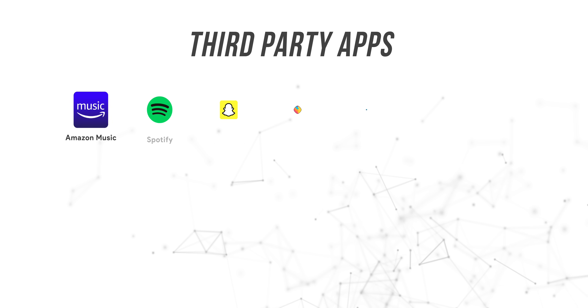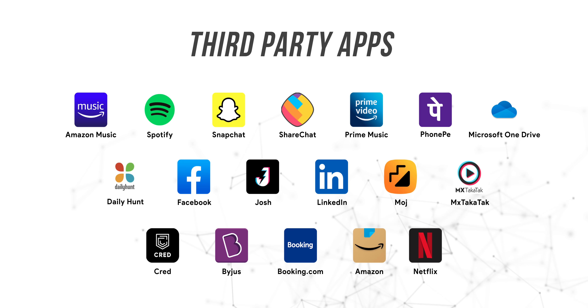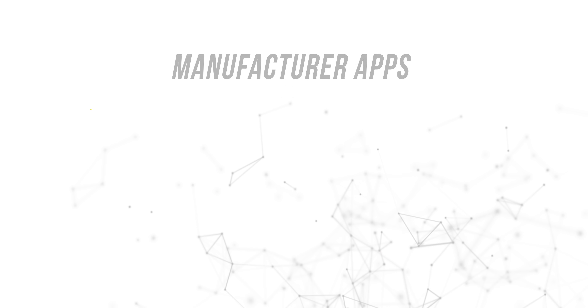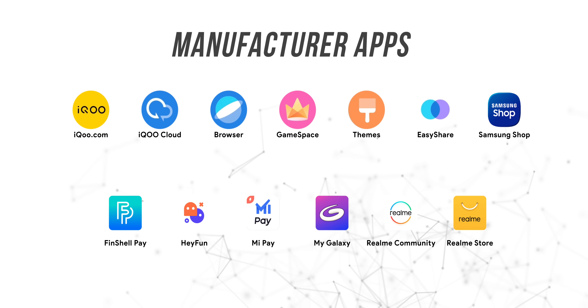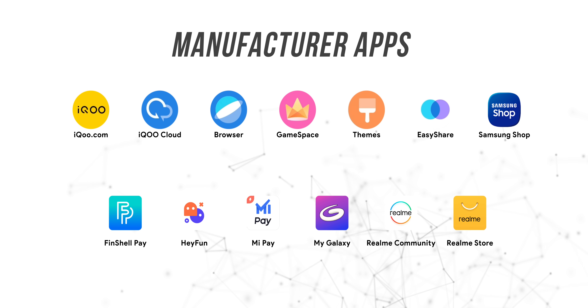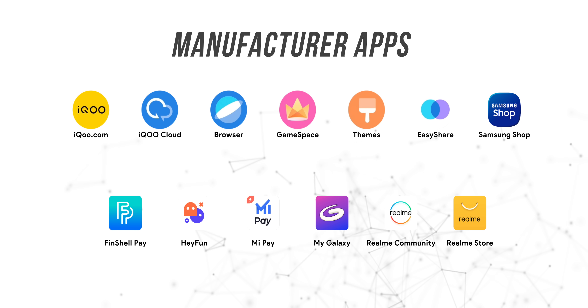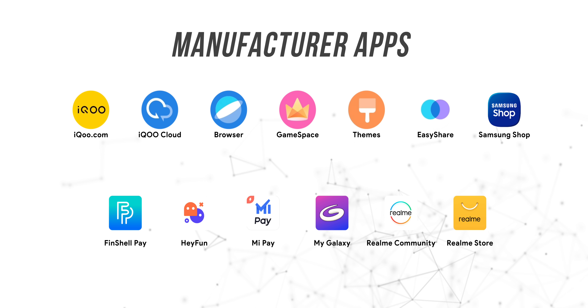The first type is third-party bloatware apps, and mostly these can be uninstalled easily, so these are maybe okay. The second type of bloatware apps are from the manufacturer itself. Most of these can't be uninstalled — they can only be disabled.